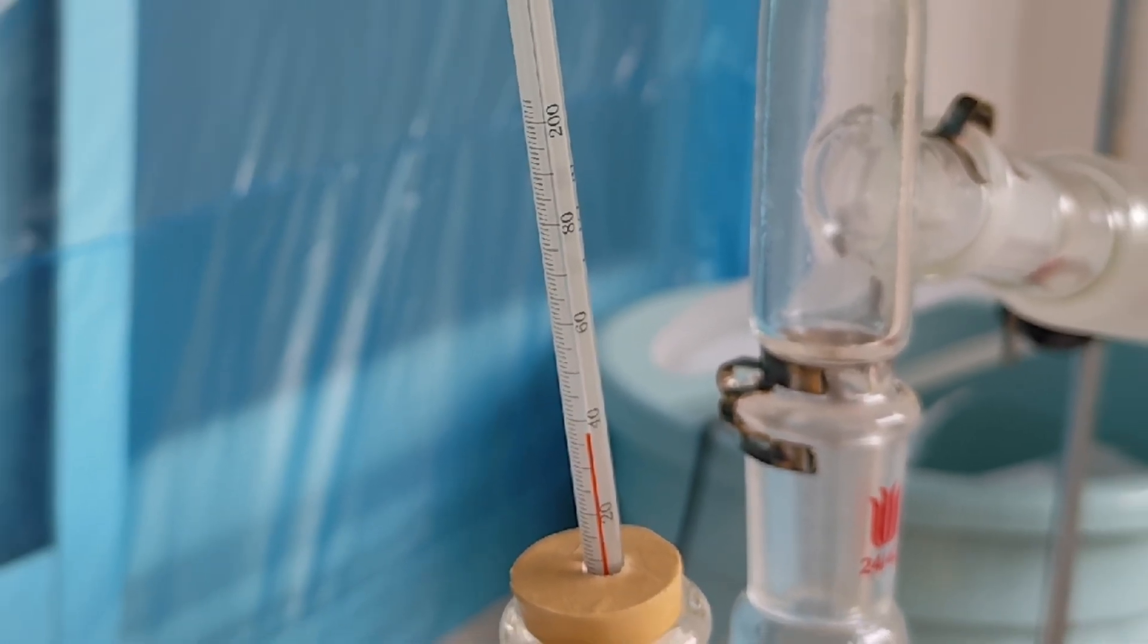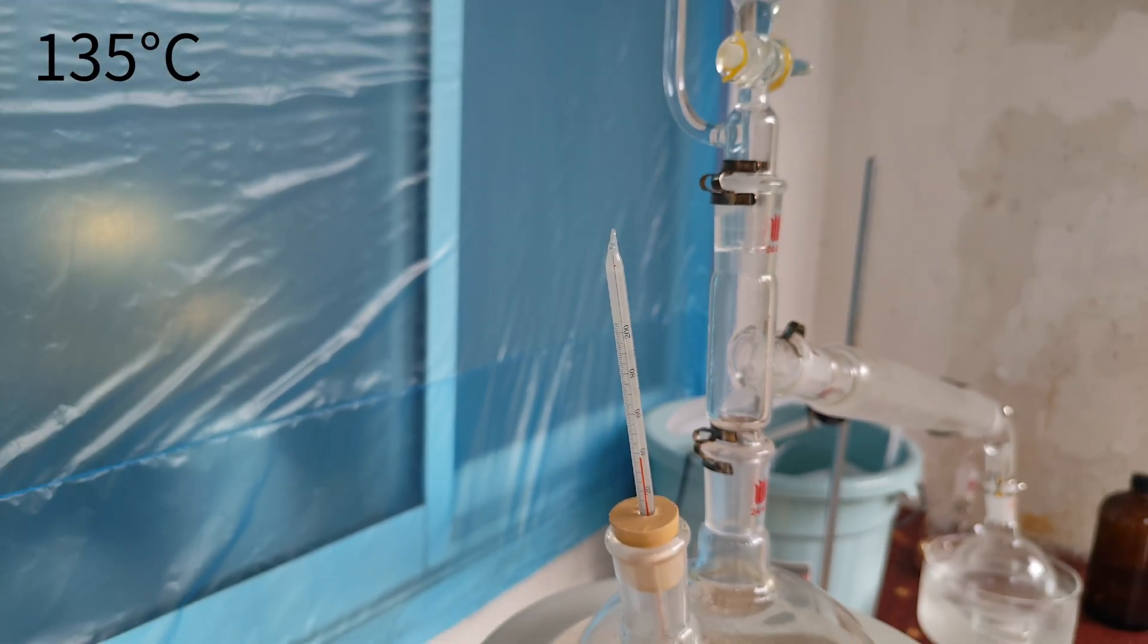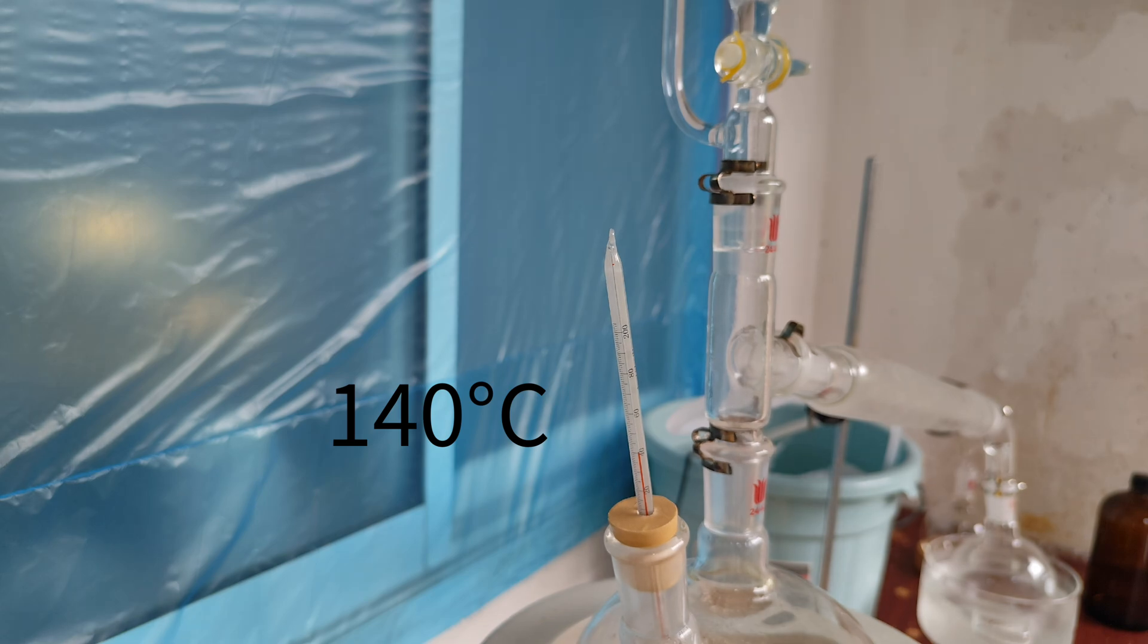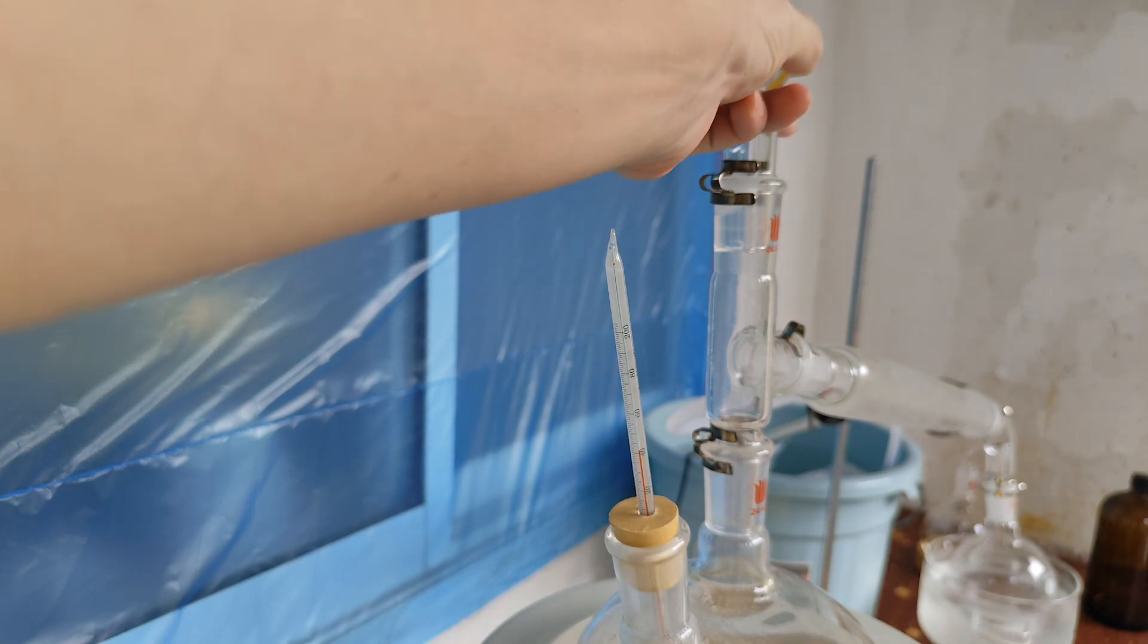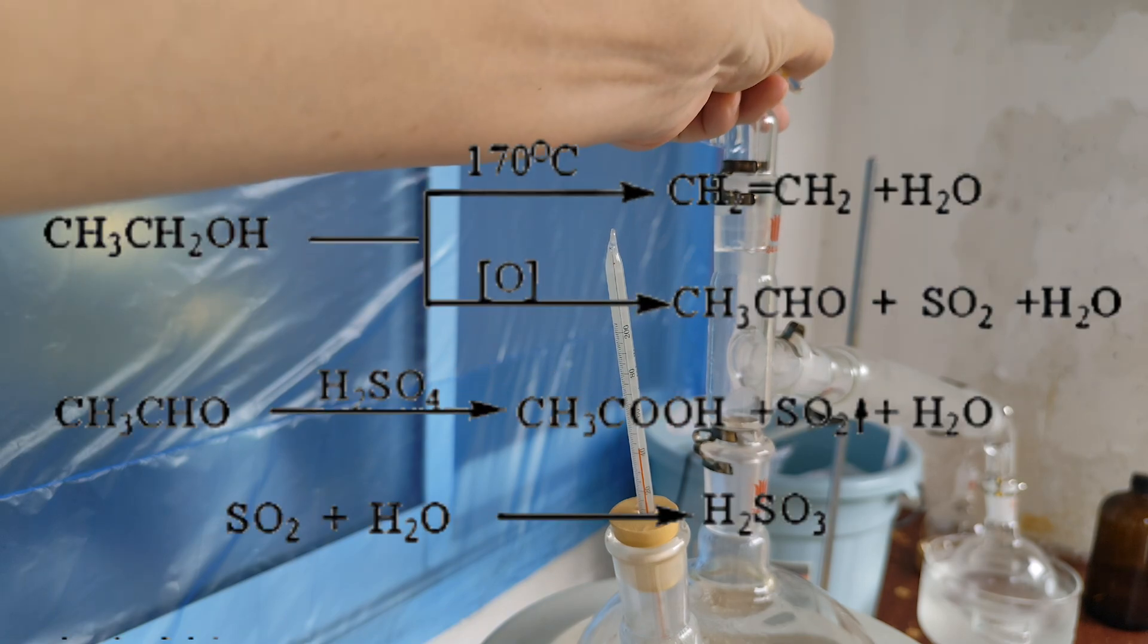The most suitable temperature of the reaction is from 135 to 145 degrees, so I must keep attention on the thermometer. Once the temperature is near 140, I should turn on the stopcock of the dropping funnel to add the alcohol slowly and lower the power of the heater to ensure that it will not produce too much side products.